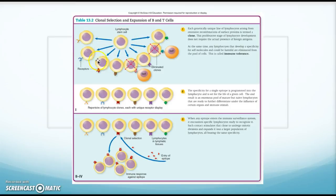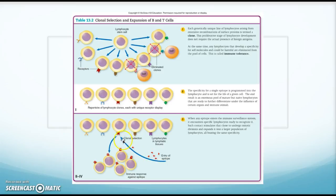This diagram shows lymphocytes as stem cells with many different unique receptors. Any that recognize self are eliminated so they don't attack the body, but all the others make up our repertoire — each cell has one unique receptor, circulating around. When a particular epitope comes along and is specific for one receptor, that T cell proliferates and all its clones will have that exact same receptor site, allowing them to recognize the pathogen during infection. The same is true for B cells, where the receptors are immunoglobulins.